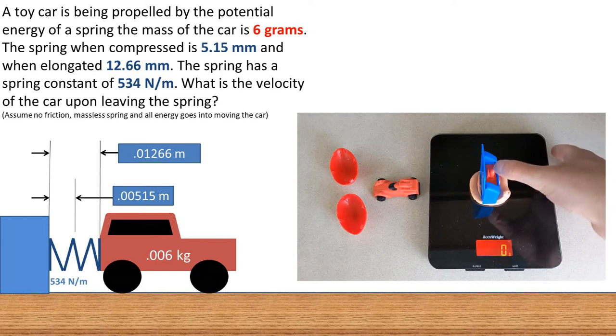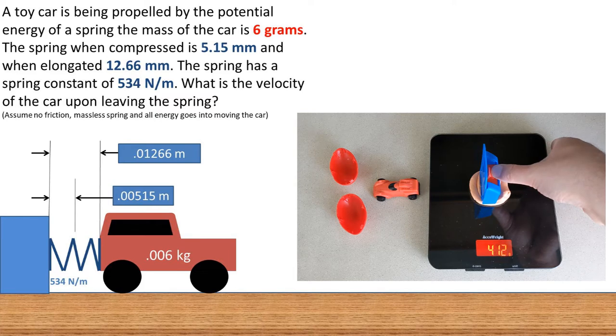I did a rough measurement of the force from the spring by placing it on a scale and came up with the spring constant of about 534 newtons per meter. We will assume a uniform spring constant.